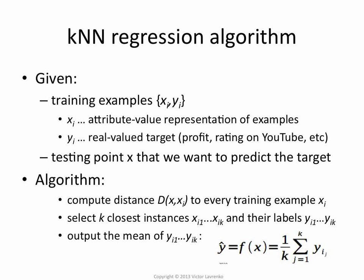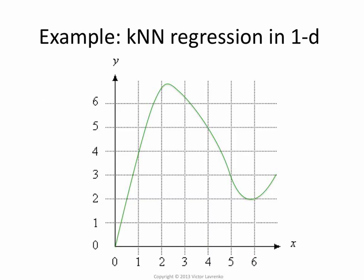And then you have a testing point and you want to predict, say, the rating for that testing point or the age of that testing point. The algorithm is identical. You compute the distance between the testing point and every training point. You pick k-nearest examples. But then, instead of taking a majority vote, you just take the mean of the corresponding values. So you found your seven nearest neighbors, you look at their ratings, and you average them to get the prediction for your testing point. So let's look at an example of how this could work. So this is regression in one dimension. My x's are just single numbers along this axis, and I'm predicting the y.